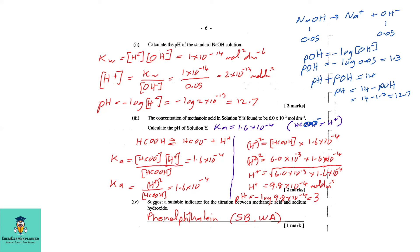Part b4: Suggest a suitable indicator for the titration between methanoic acid and sodium hydroxide. Because we are working with a strong base (sodium hydroxide) and a weak acid (methanoic acid), the best indicator would be phenolphthalein.